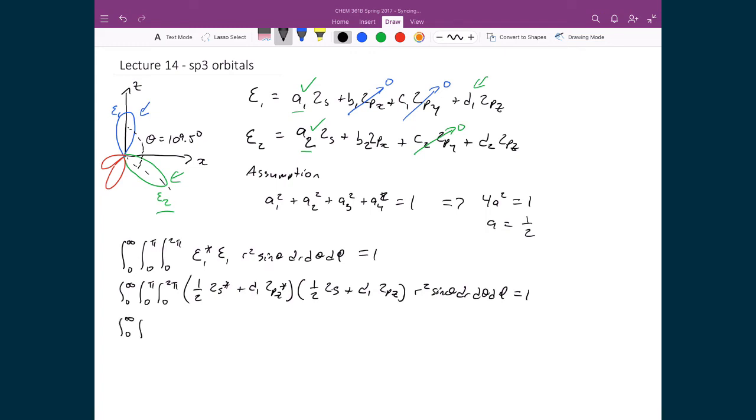I'll foil out these terms. Integral between 0 and infinity, integral 0 to π, integral 0 to 2π. I'm going to get 1 quarter 2s star times 2s plus 1 half d1, 2s star, 2pz, plus d1 over 2, 2pz star, 2s plus d1 squared, 2pz star, 2pz. And that's multiplied by r squared, sin θ, dr dθ dφ. And that equals 1.